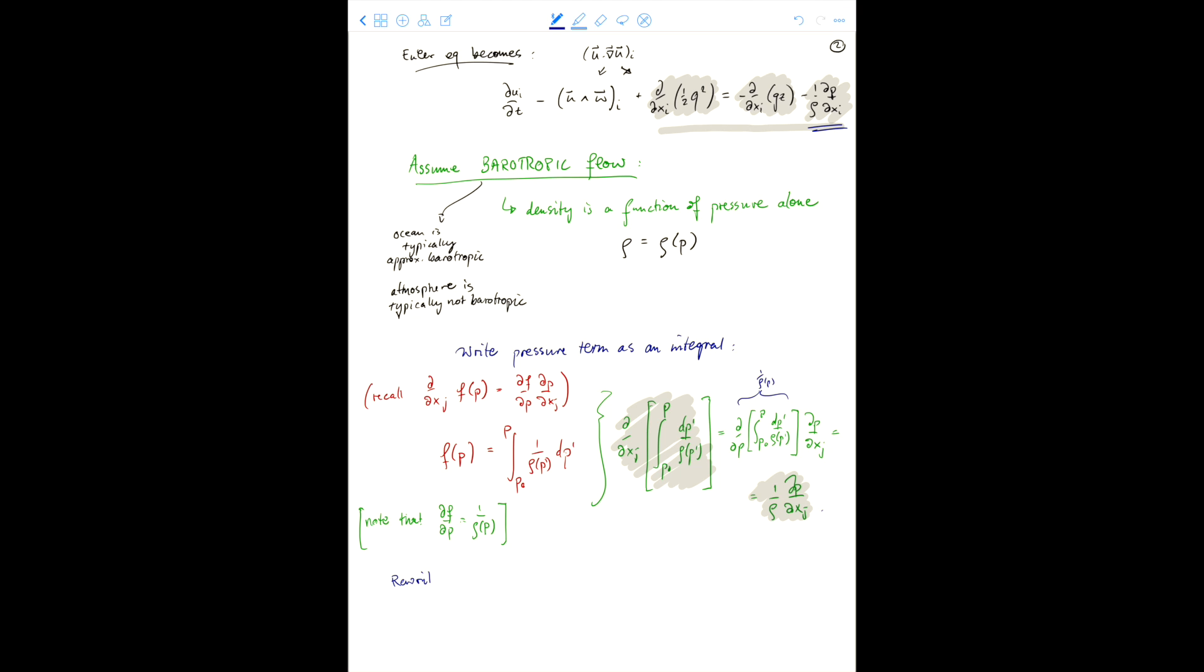So we can express these whole three terms as the gradient of one scalar quantity. So let me write that out. Let's rewrite Euler. We still have dui dt. And then let's take this second term over onto the other side. So that becomes positive. I'm turning everything positive here. And then here we get a term d by dx i that has three scalar components. Namely, gz plus, and now we have this pressure term, plus a half q squared.